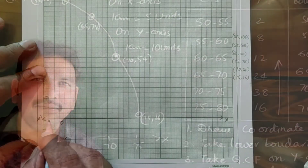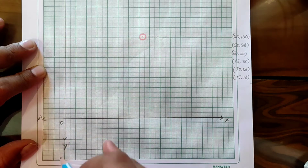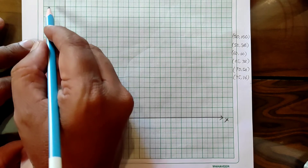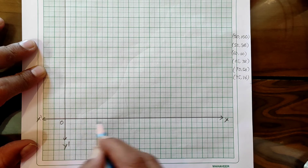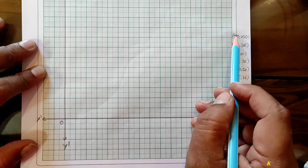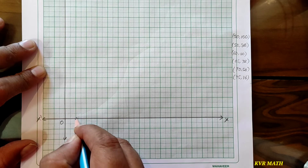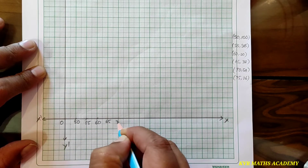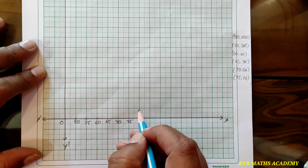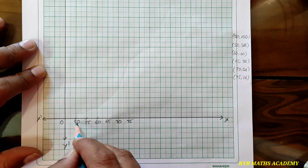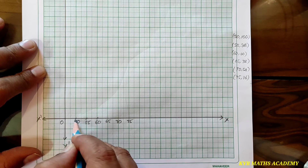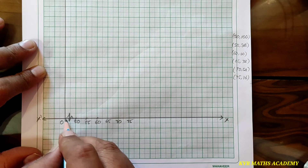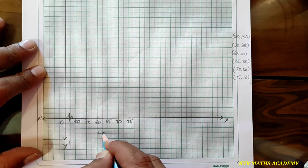Now on the graph sheet, first draw two coordinate axes — x-axis and y-axis. Take lower boundaries on the x-axis and greater than cumulative frequencies on the y-axis. Mark points on the x-axis: taking 1 centimeter as 5 units, mark 50, 55, 60, 65, 70, 75. Since the gap from origin to 50 is not equal to the spacing between the other points, we place a kink there.